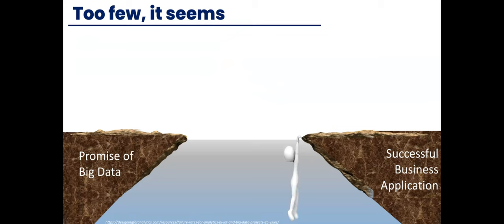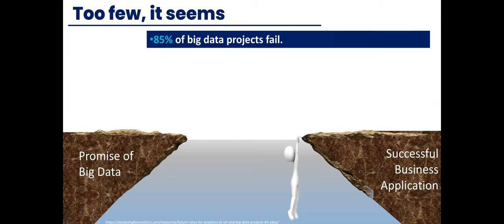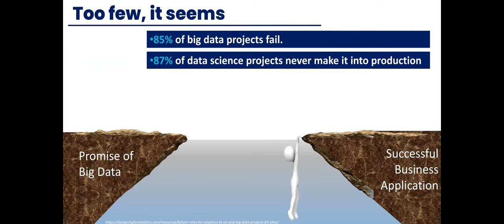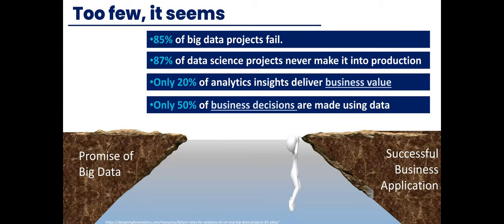Well, there's also another set of messages that they're getting. And that is when the Gartner Group and other organizations actually dig into when big data analytics gets applied, we see results like this, that 85% of big data projects fail at least the first time, 87% never make it into production, only 20% deliver business value, and that fewer than 50% of business decisions are being made using data. We still rely on our old gut instincts in many cases.